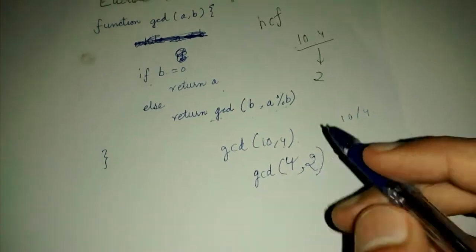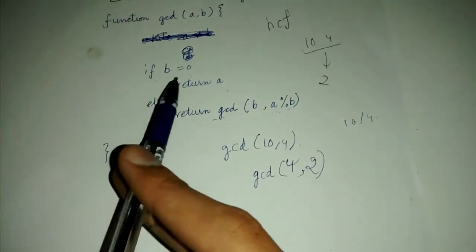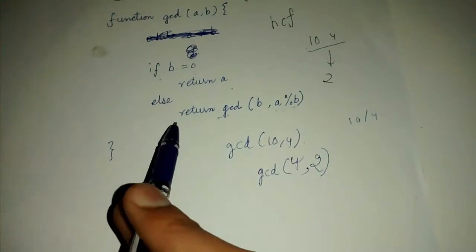Again, we go in the GCD function. We see B is not equal to 0. So we go into the else condition.